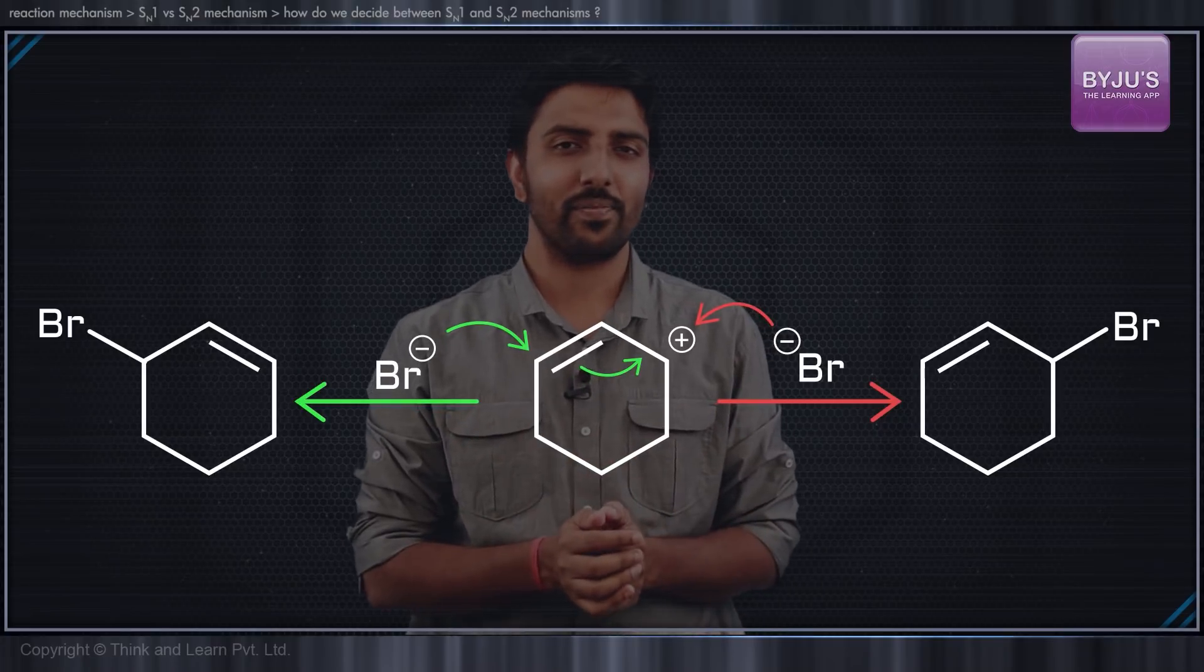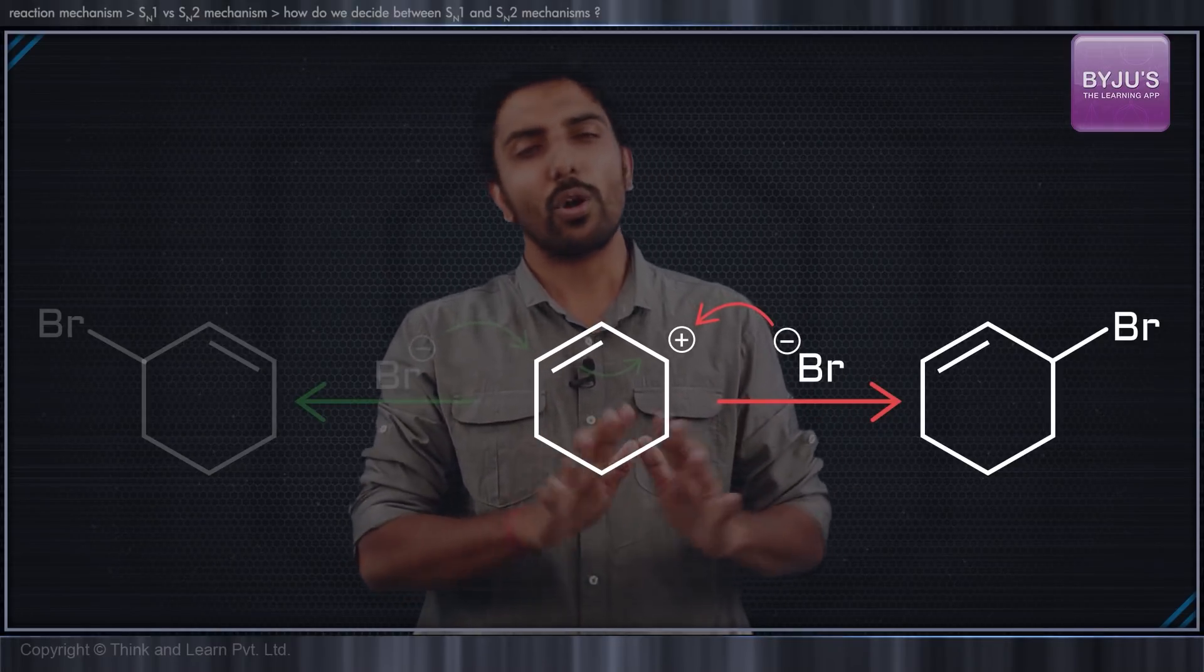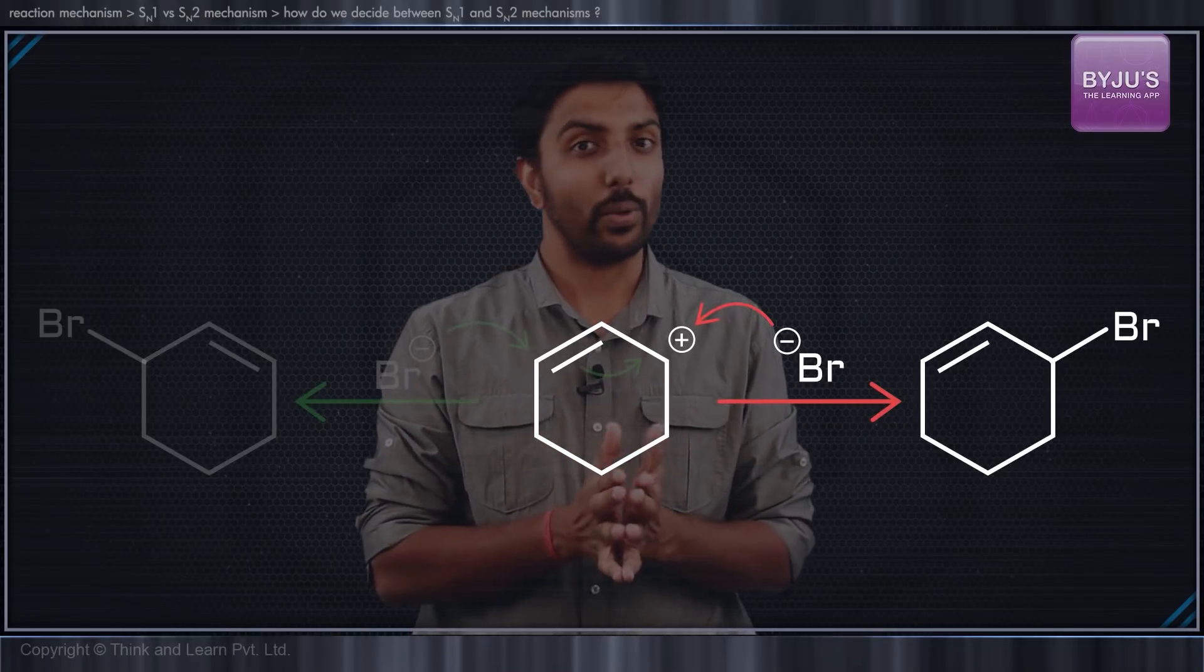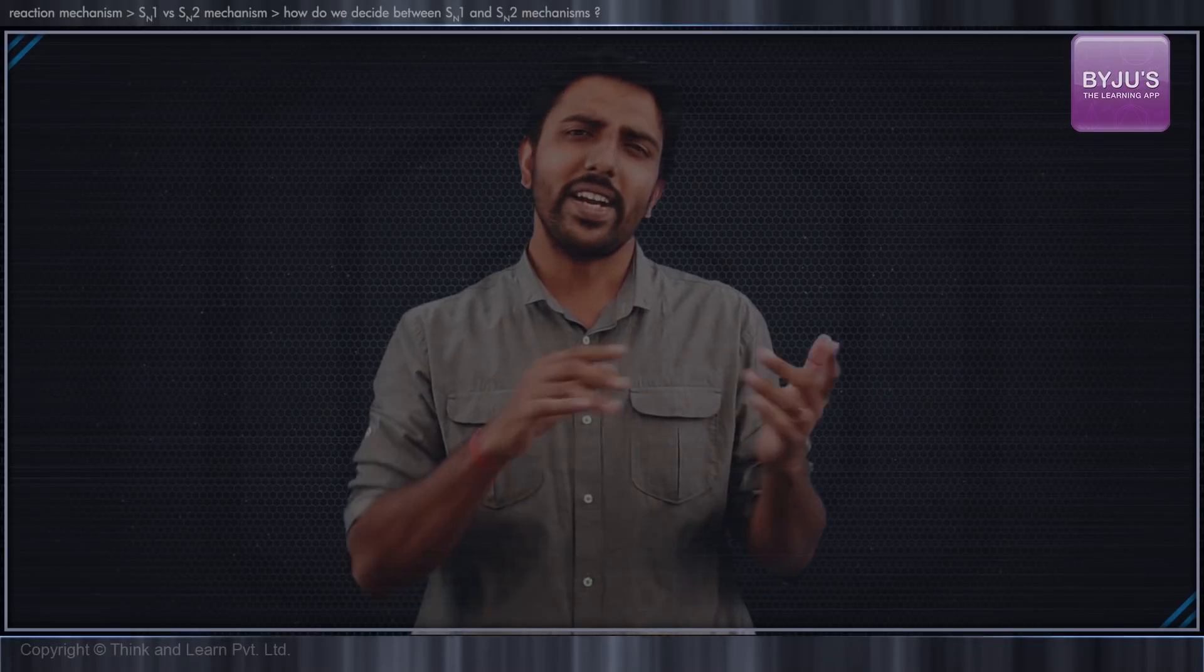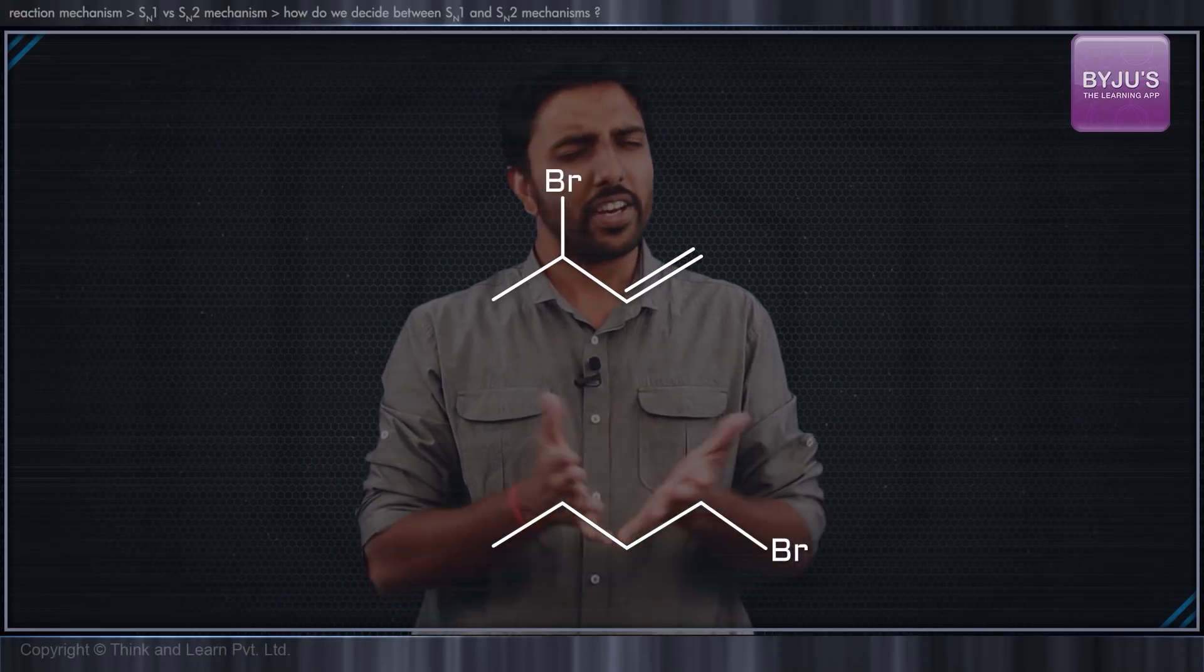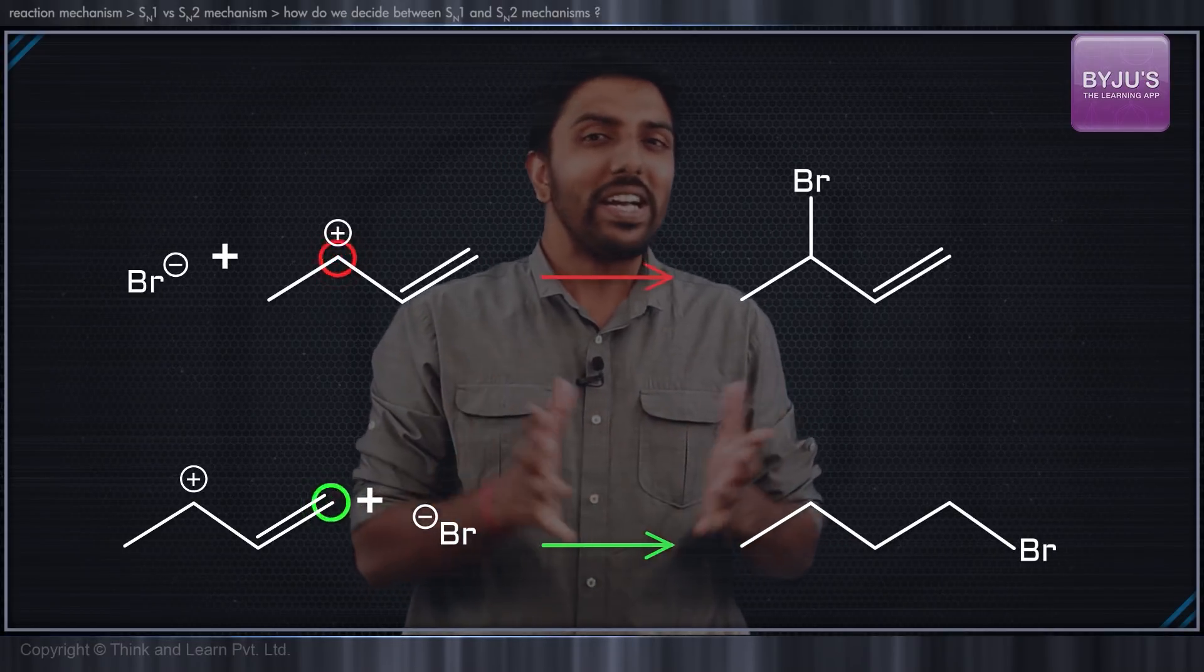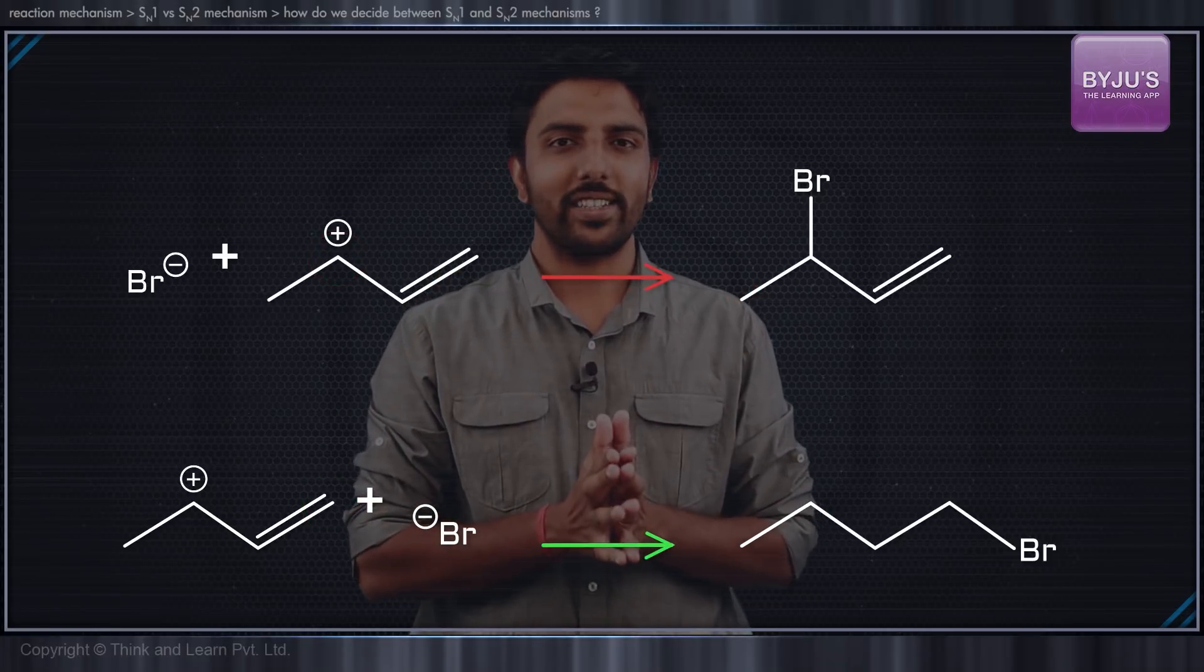In this case, there is just one product, although there seem to be two competing sites for the nucleophile to attack. Had we taken an unsymmetrical allyl substrate, we will likely get these products. Here there are two different products because there are two unequal competing sites for the nucleophile to attack.